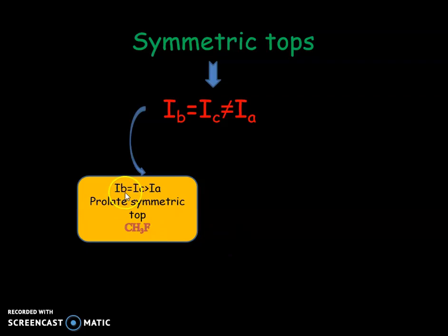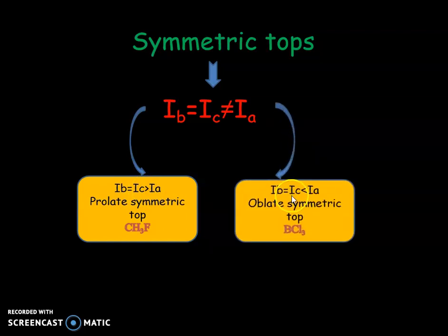Ib equal to Ic can be greater than Ia and Ib equal to Ic can be less than Ia. The first group is known as prolate symmetric top molecules, where methyl fluoride is the example.